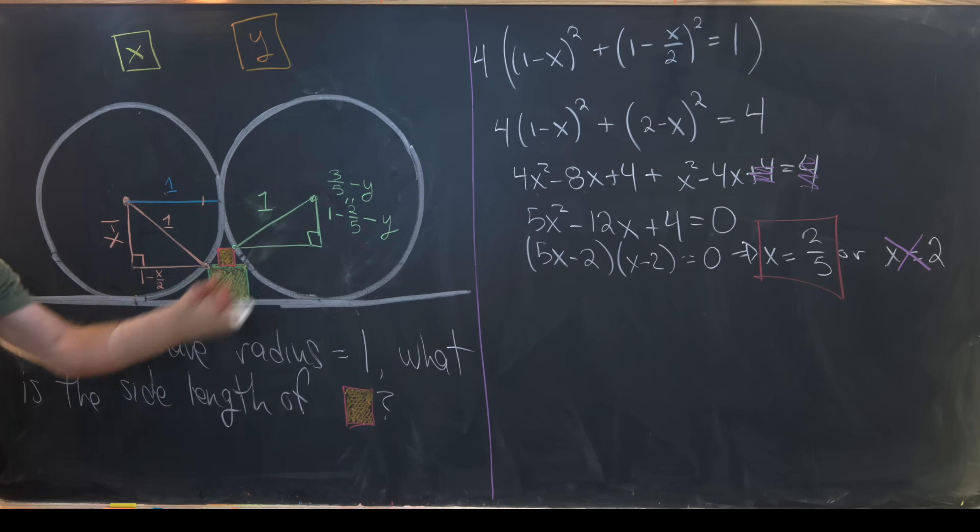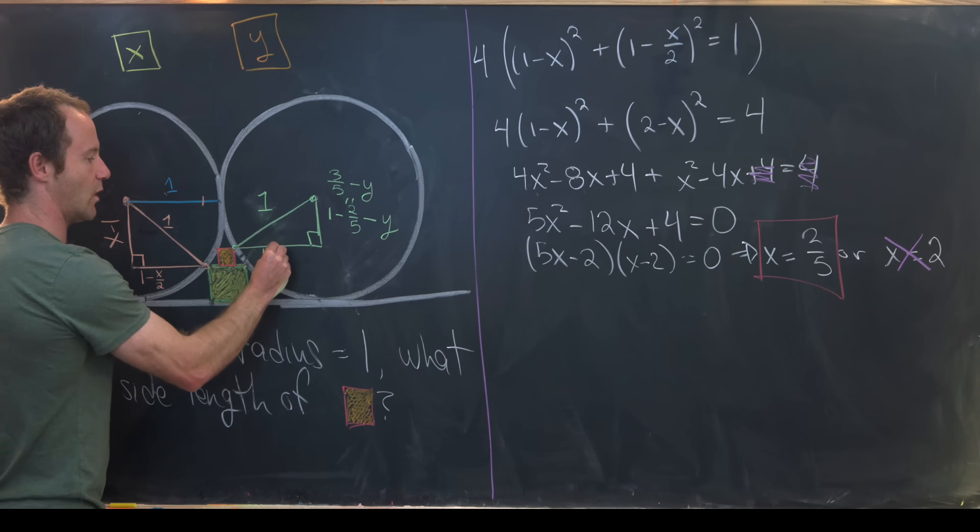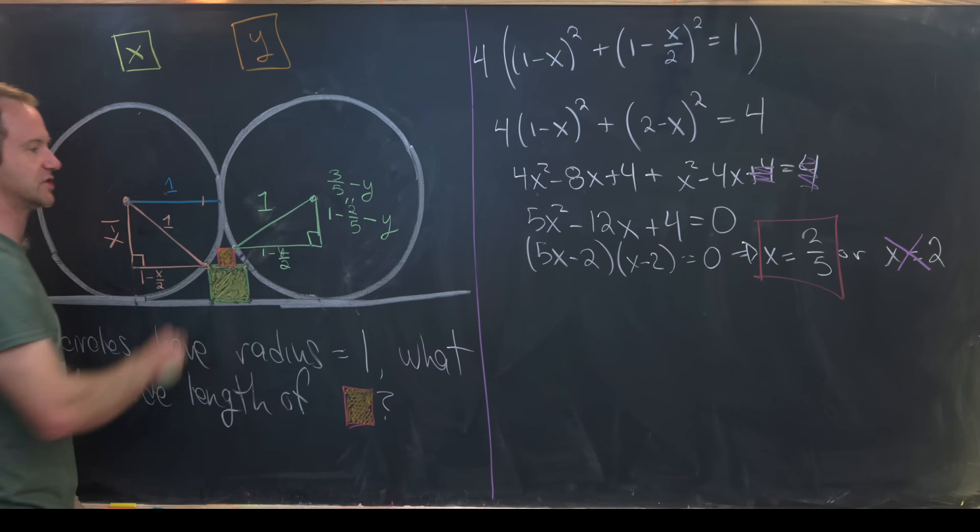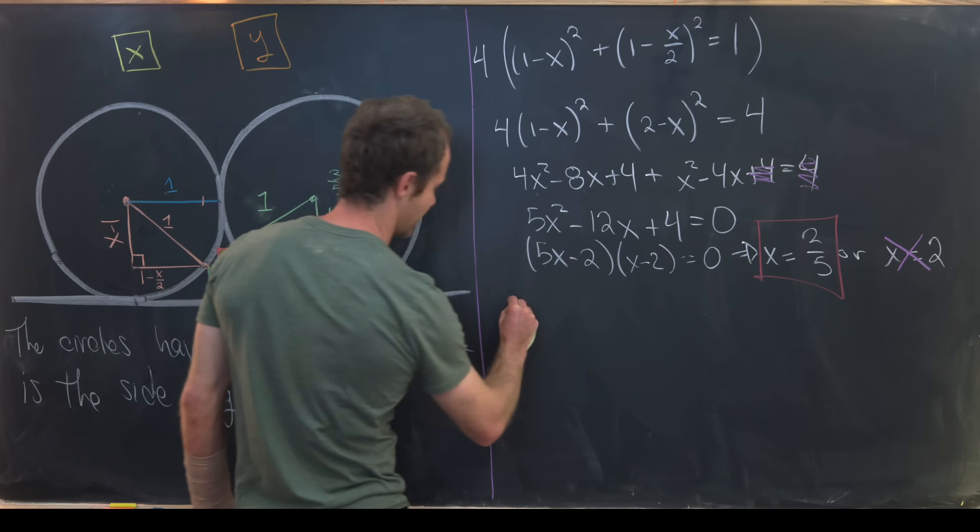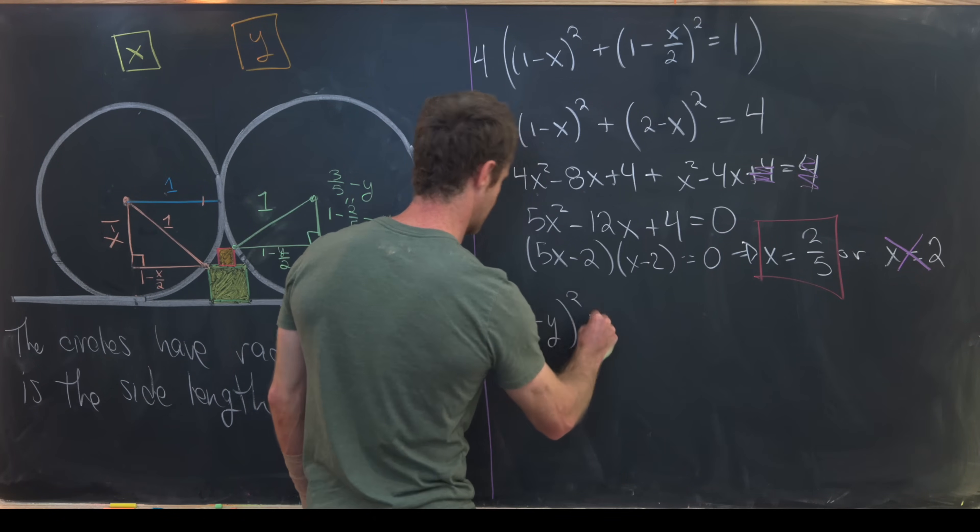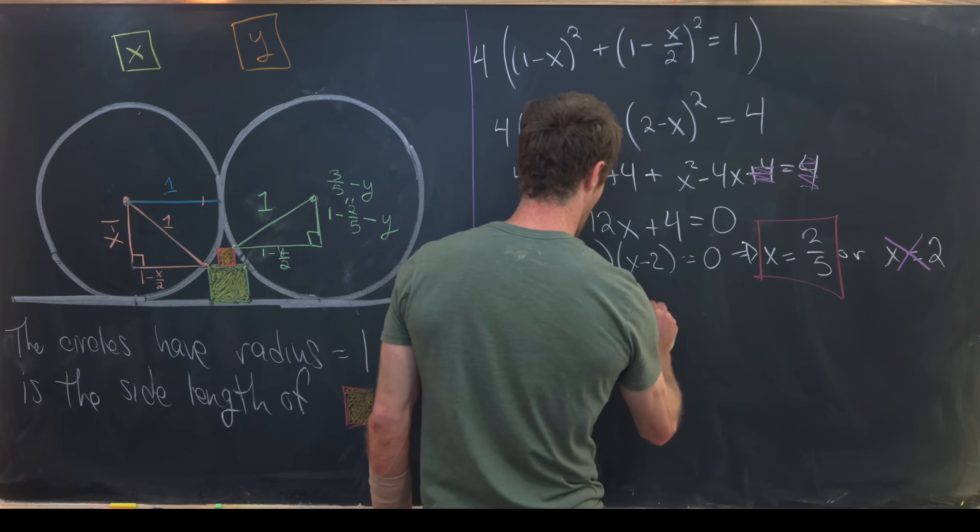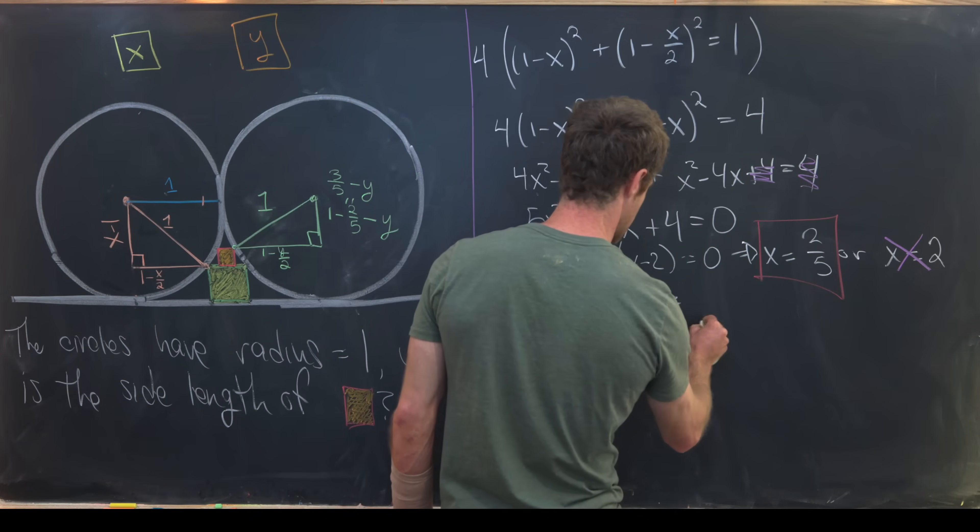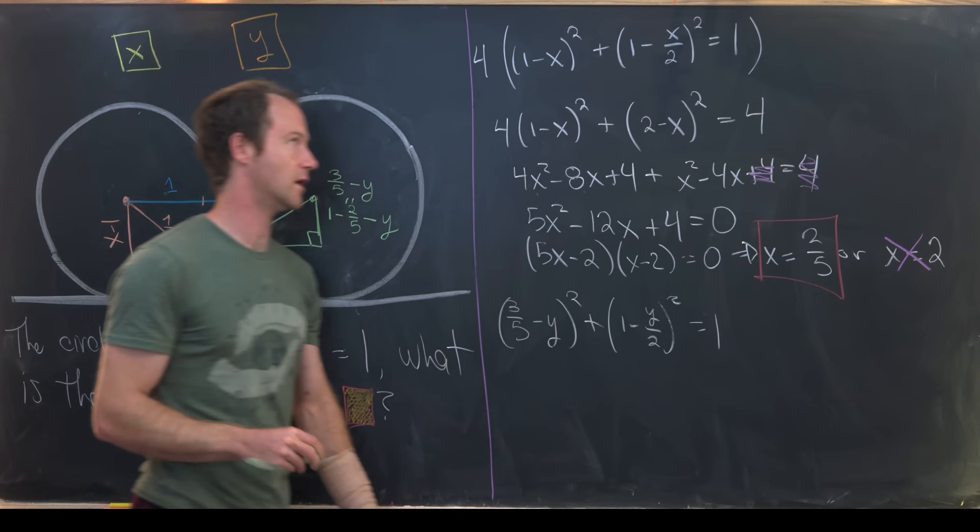Now let's see what we have here. Just like we had in this base, we'll have the same thing for this. It'll be 1 minus y over 2. Now we can use the Pythagorean theorem one more time. So we have (3/5 - y)² + (1 - y/2)² equals 1² which is 1.